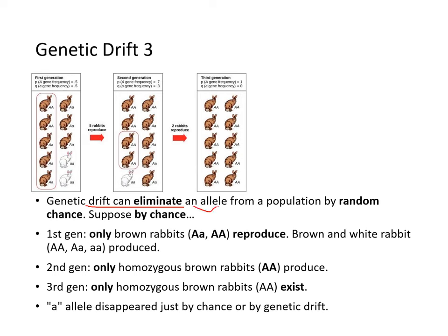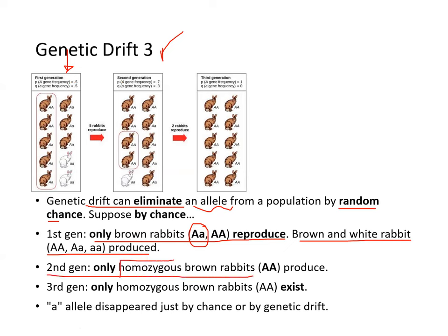Genetic drift can eliminate an allele entirely by random chance. Suppose by chance in the first generation only the brown rabbits reproduced — heterozygote big-A little-a or homozygote big-A big-A. Brown and white rabbits are produced in the second generation because heterozygotes are reproducing. But if in the second generation only homozygote brown rabbits reproduce, by the third generation only homozygote brown rabbits exist. The small-a allele coding for the white coat disappears entirely just by chance.